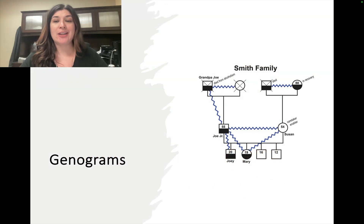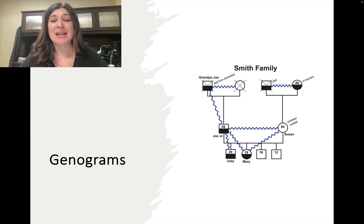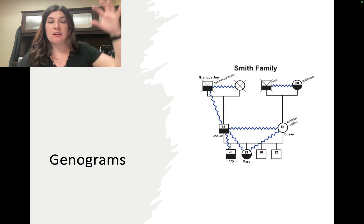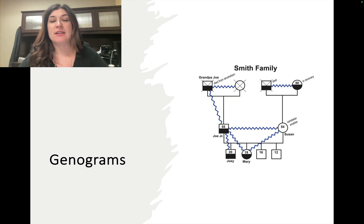Within this class, we'll learn a lot about genograms. This is an example of a family where addiction has been present and has impacted the entire family. You can see that Grandpa Joe died from alcoholism, and one of the grandmothers on the Smith family is in recovery from alcohol and addiction. You'll also see some of the impacts on individuals across generations where alcoholism has affected them.